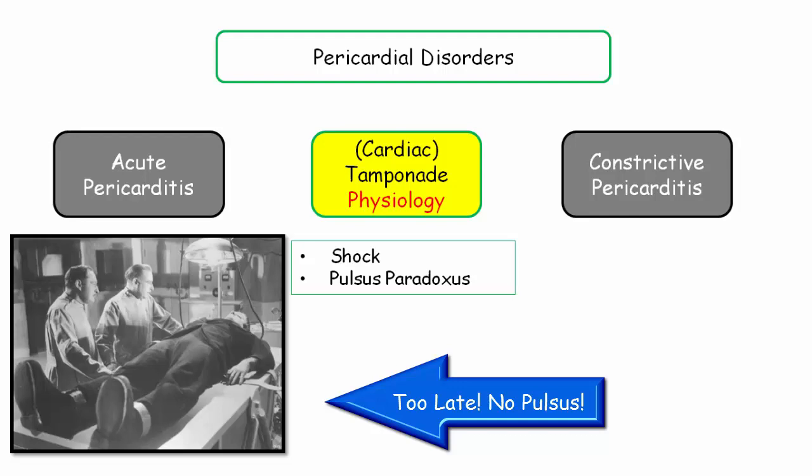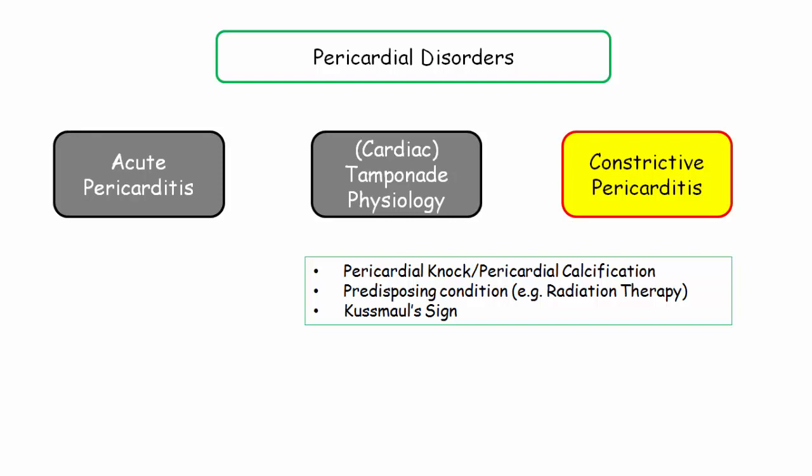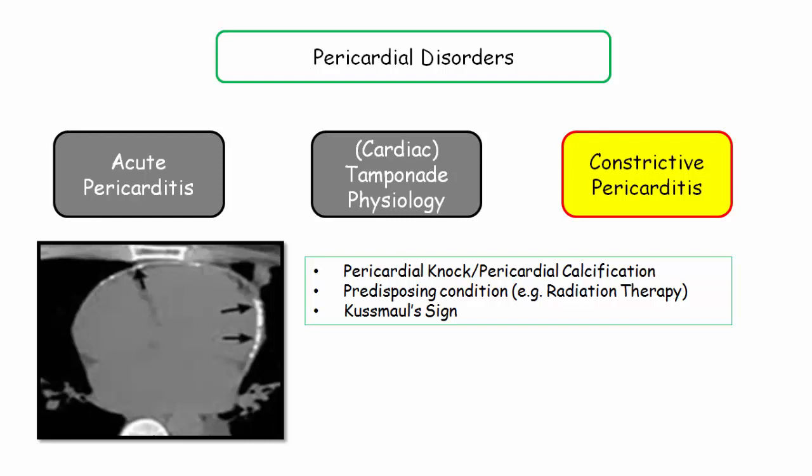And finally, for constrictive pericarditis, expect either a pericardial knock or a description of pericardial calcification. Recall, the knock is simply the heart banging into the calcified pericardial sac. So the description of a knock or radiographic description of pericardial calcifications are really describing the same process.